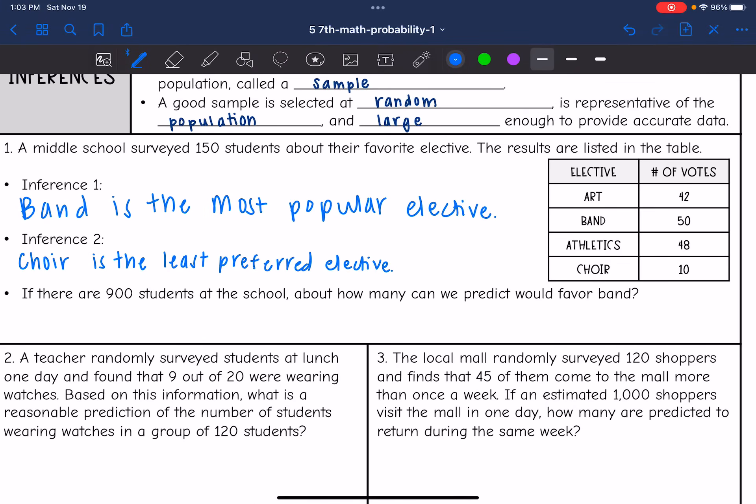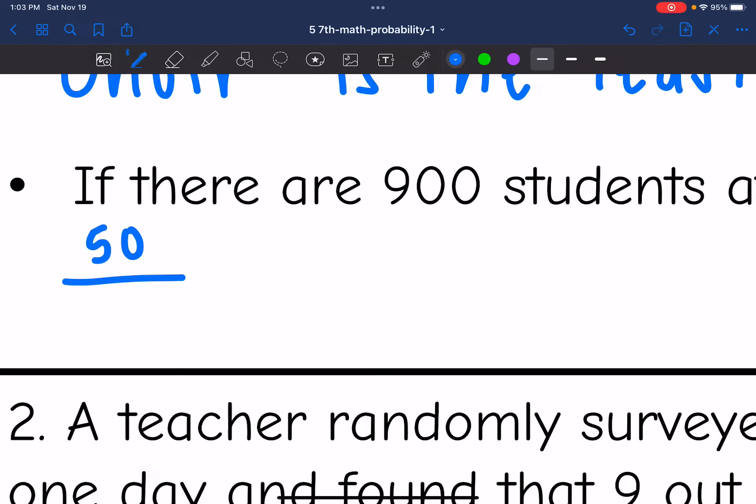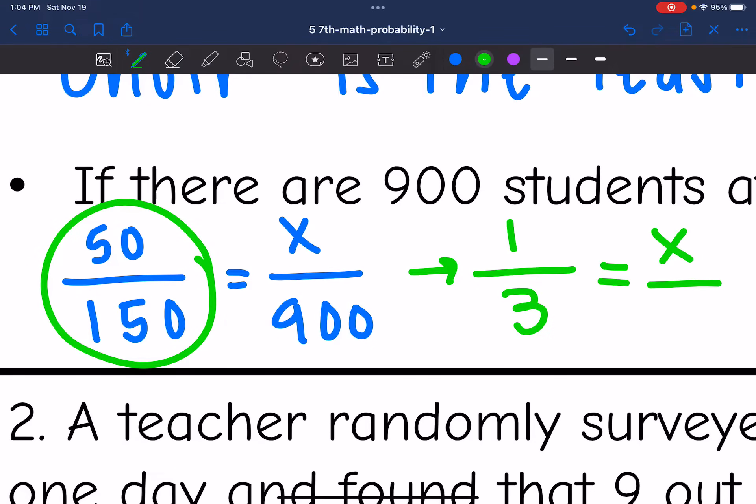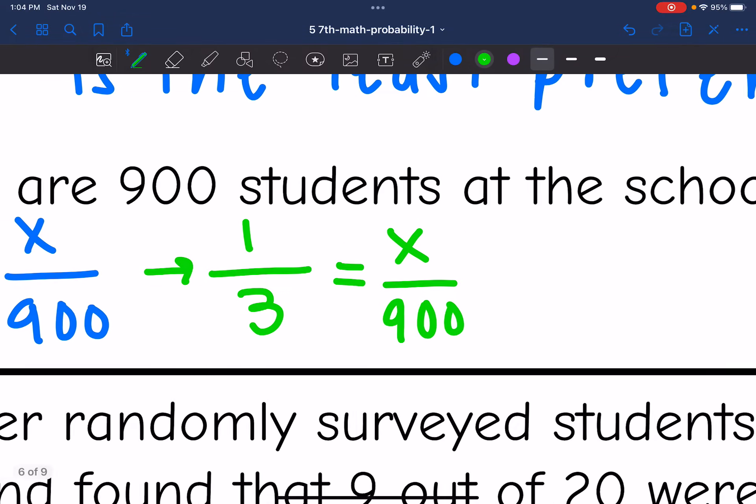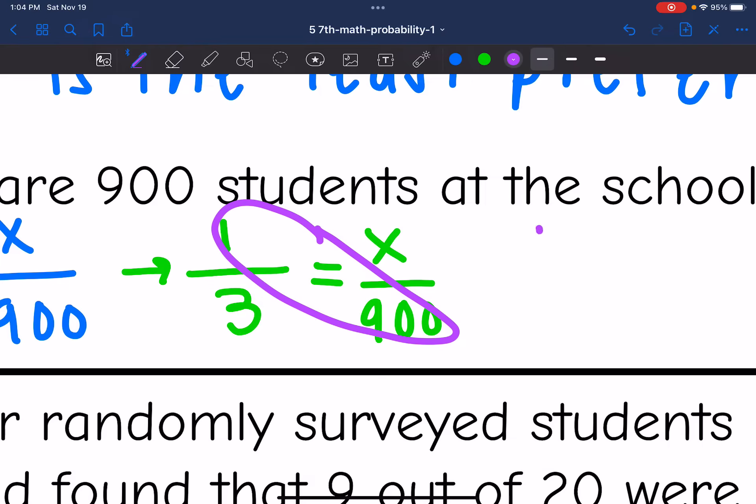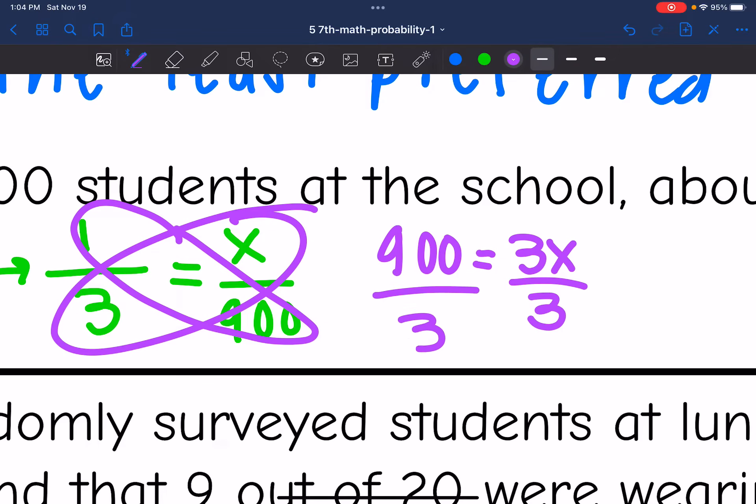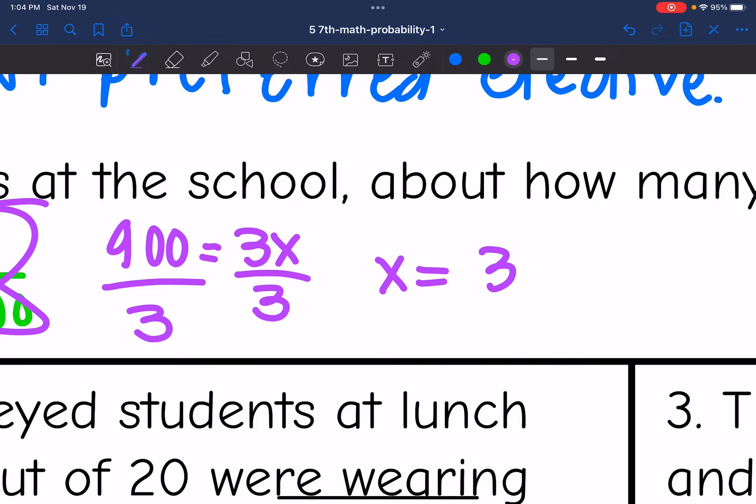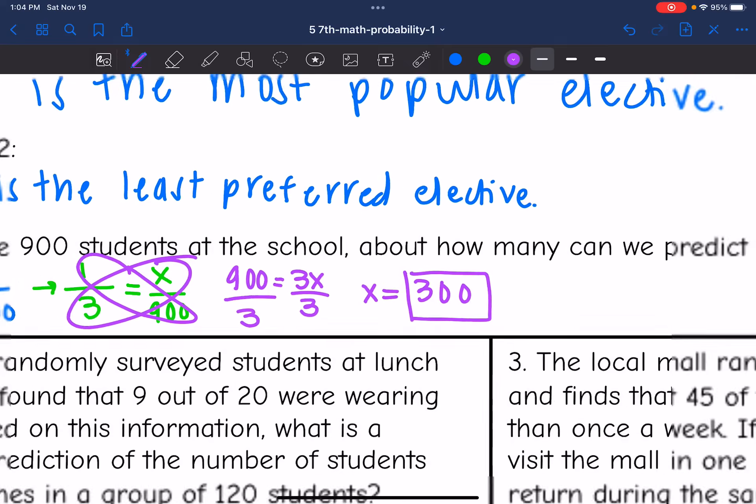And then the last one says, if there are about 900 students at the school, about how many can we predict would favor band? So I know that 50 out of the 150 surveyed said they prefer band. And I want to know how many out of the 900 would prefer band based on that survey result. I'm going to simplify this fraction by dividing both of those numbers by 50. So that fraction simplifies to 1/3 equals x over 900. And now this is much easier to work with. So I'm going to cross multiply to solve this proportion. 1 times 900 is 900. And then 3 times x is 3x. And then we're going to divide by 3. And 900 divided by 3 is 300. So we would say about 300 students would prefer band based on that survey.